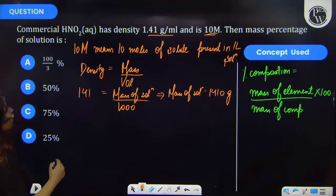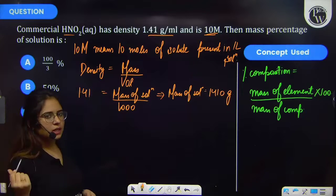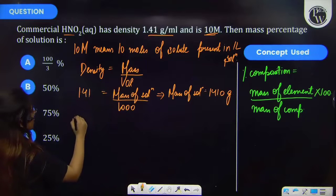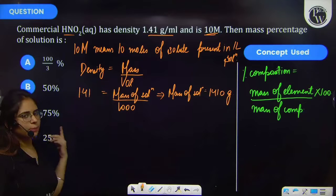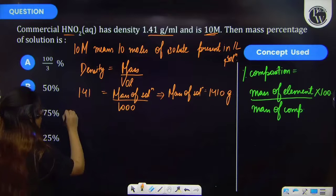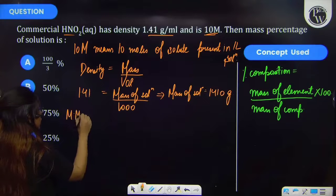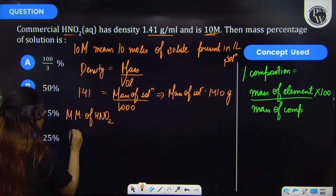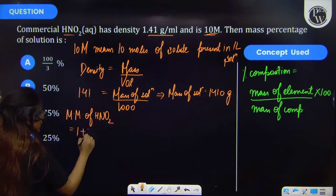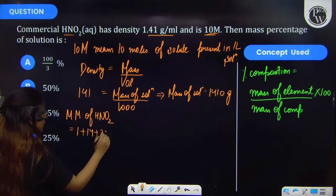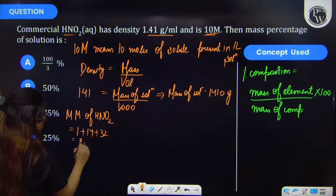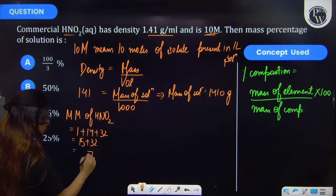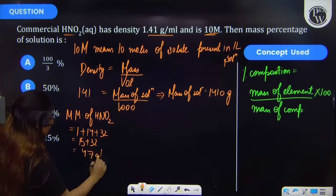Further if I talk about HNO2 which is the mass of solute here, so it will be 1 plus 14 plus 32. So therefore it will be 47 gram per mole.